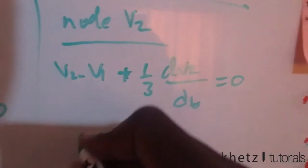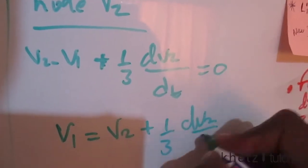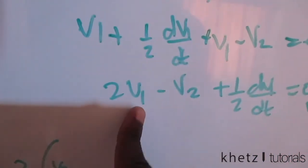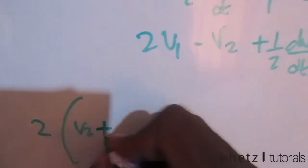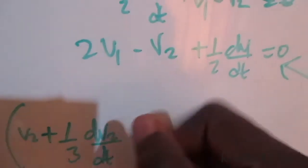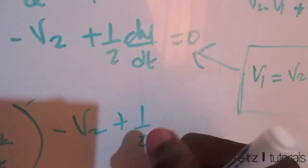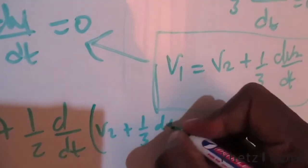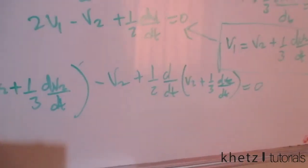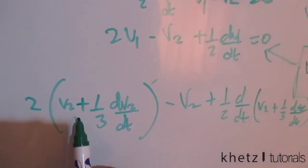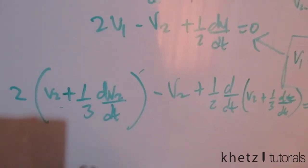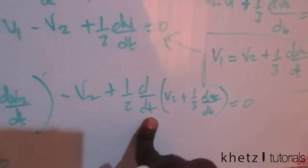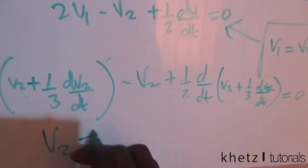Rearranging the node v2 equation, v1 = v2 + (1/3)(dv2/dt). Substituting this expression for v1 into the node v1 equation and simplifying, the v2 terms cancel appropriately. Combining the derivative terms — 3/6 and 4/6 — gives 7/6, so the equation becomes v2 + (7/6)(dv2/dt) plus the second-derivative term equals zero.